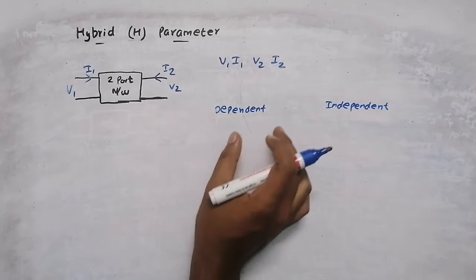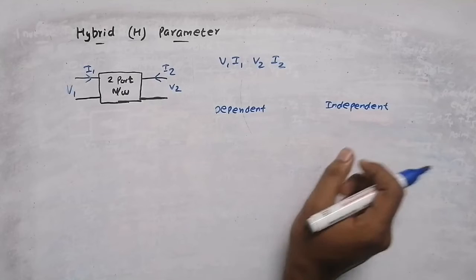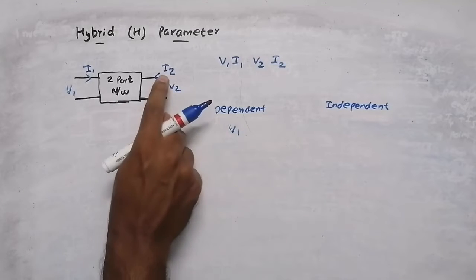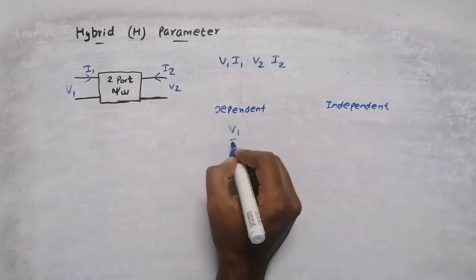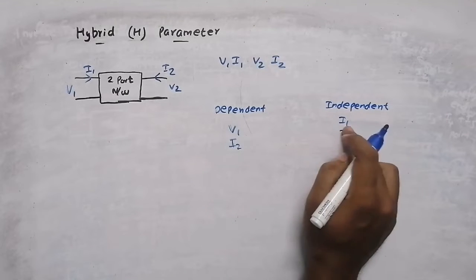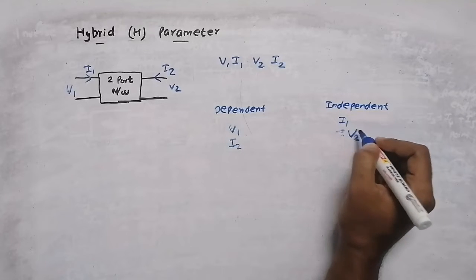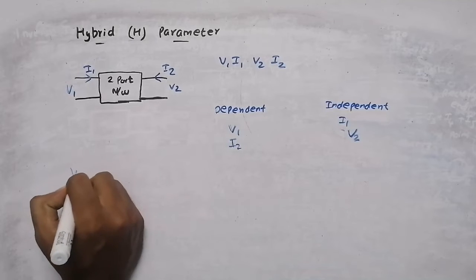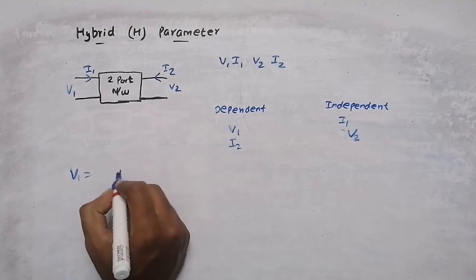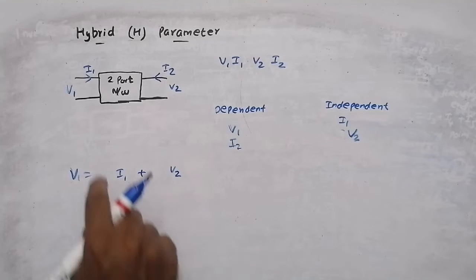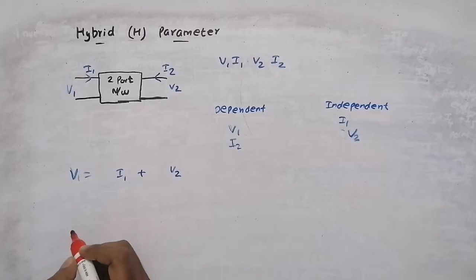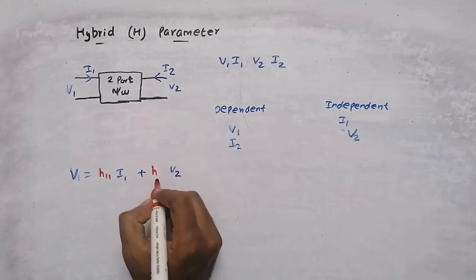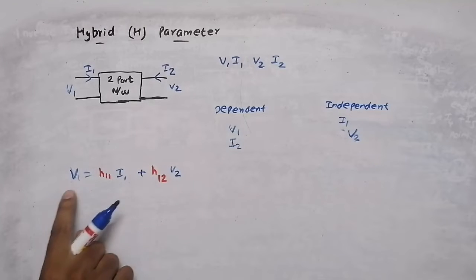In a two-port network we will use only two variables at a time — dependent and independent. We are going to find v1 and i2 using i1 and v2. In hybrid parameters, the constants are h11 and h12. This is the equation for finding v1 using i1 and v2.